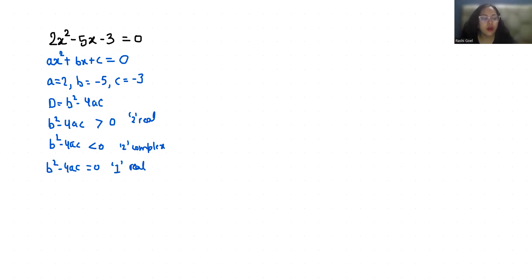Let's check which option verifies. So D = b² - 4ac. The value of b is -5, squared, minus 4 times 2 times -3.